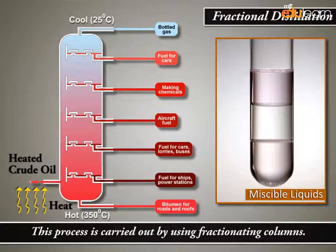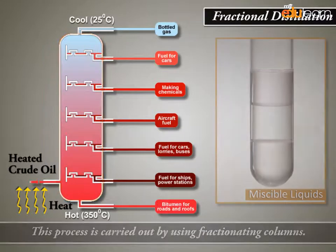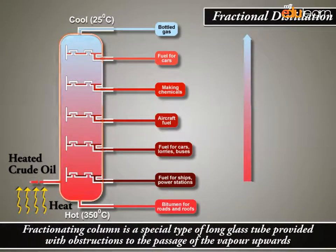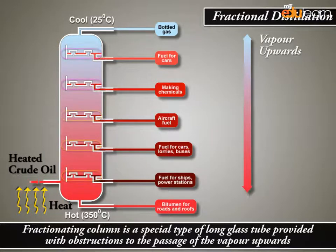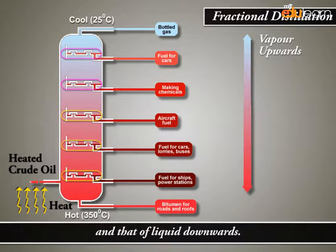This process is carried out by using fractionating columns. A fractionating column is a special type of long glass tube provided with obstructions to the passage of the vapor upwards and that of liquid downwards.